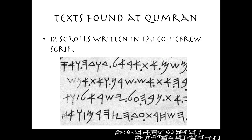Twelve of the scrolls were written in Paleo Hebrew script. This is what it looks like - this is the Misha inscription, which we'll probably talk about at some point in the future. Twelve scrolls were written in this Paleo Hebrew style.